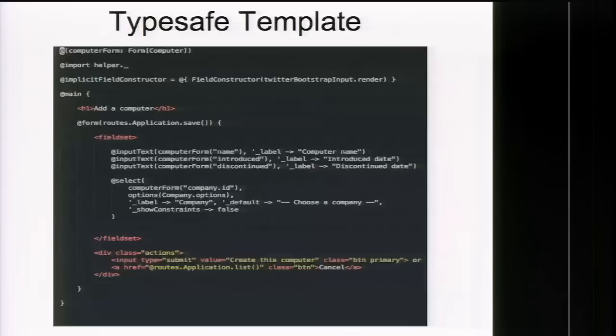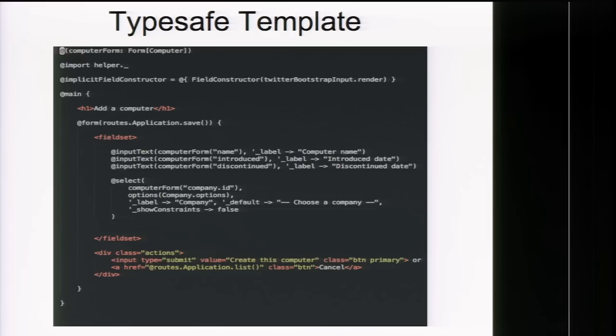This is how a typesafe template looks. On top you define the variables that the template accepts. If you try to pass more parameters or an argument that's a different type than expected, you'll see a compilation error. There's also a form helper in Play that lets you bind and generate a whole form tag which you can map back to your application. The demo will show this in more detail.